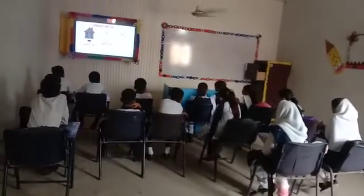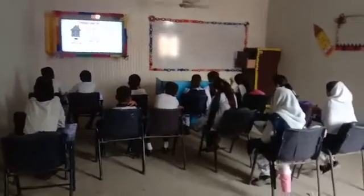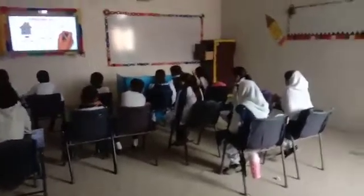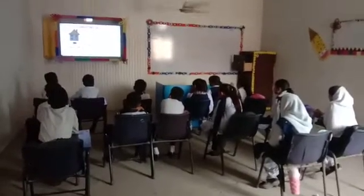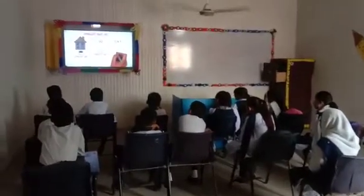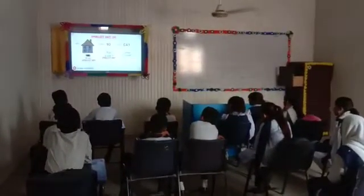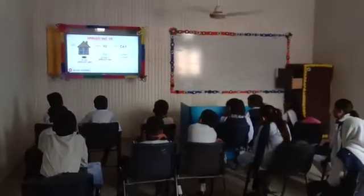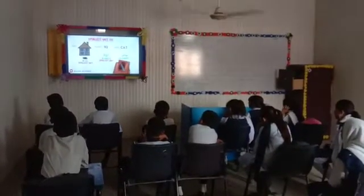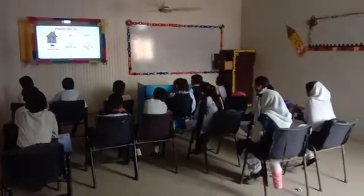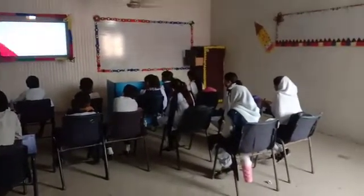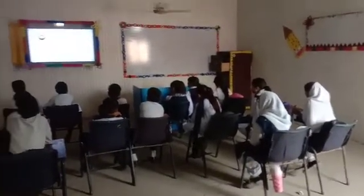Secondly, we know that the word 'cat' is formed from three letters: C, A, and T. So any letter is the smallest unit, SU, and basic unit of any word.